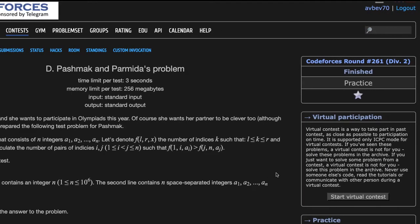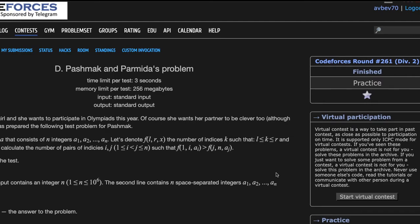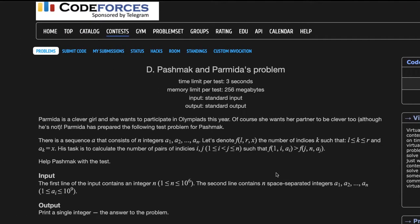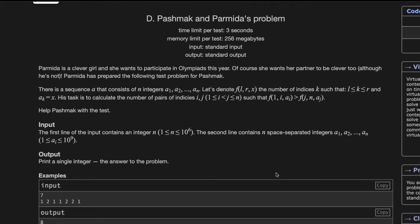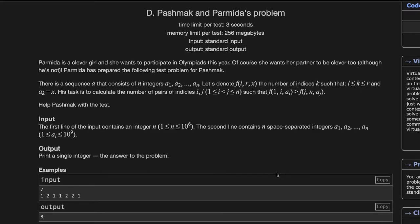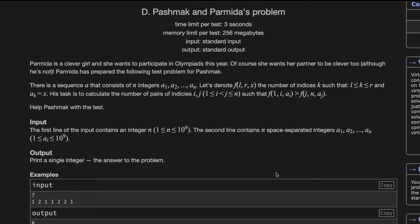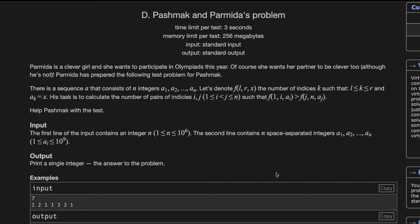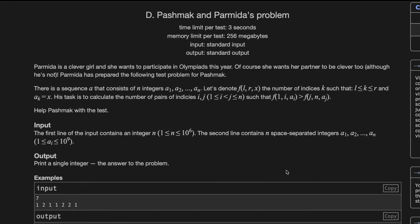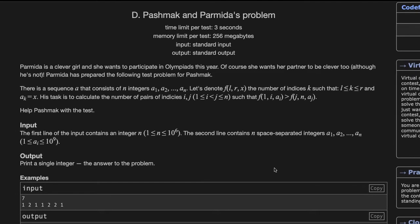Pashmak and Parmida's problem, that is Codeforces Round 261 Div 2D. We'll be discussing three different approaches to solve this problem. The first is - and all of them use segment tree - and the last approach uses Fenwick tree. So the first approach is to use a merge sort tree.